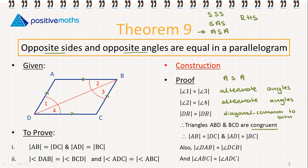Therefore, we've shown that the two angles and the side in between are equal for both triangles. Therefore, the two triangles are congruent. Therefore, AB is equal to DC, and AD is equal to BC.